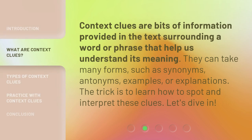Context clues are bits of information provided in the text surrounding a word or phrase that help us understand its meaning. They can take many forms, such as synonyms, antonyms, examples, or explanations. The trick is to learn how to spot and interpret these clues. Let's dive in.